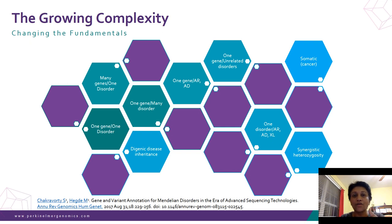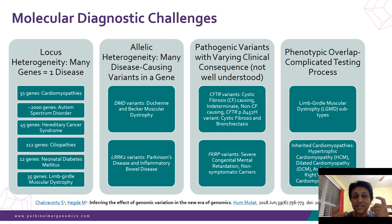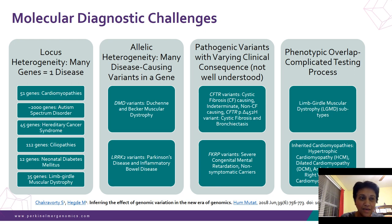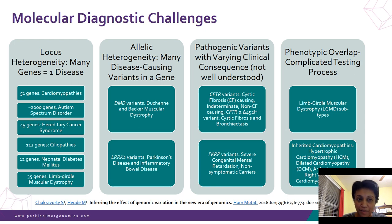Taking this further, locus heterogeneity is where many genes equal one disease — examples include cardiomyopathies, autism spectrum disorders, ciliopathies, and limb girdle muscular dystrophy. Allelic heterogeneity is where variants in DMD cause Duchenne and Becker muscular dystrophy, and LRRK2 variants cause Parkinson's disease and inflammatory bowel disease, depending on variant type.